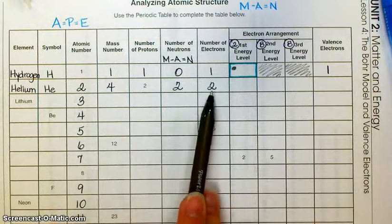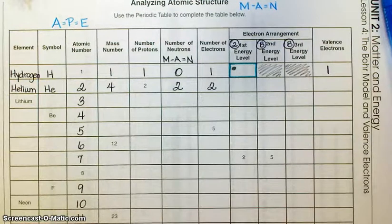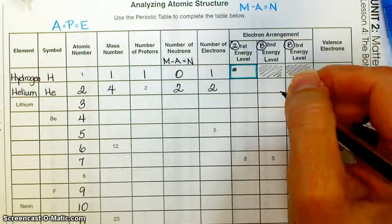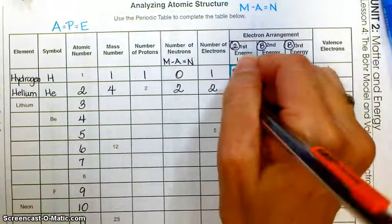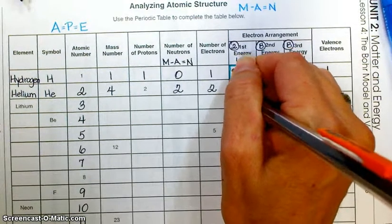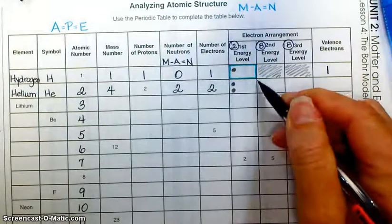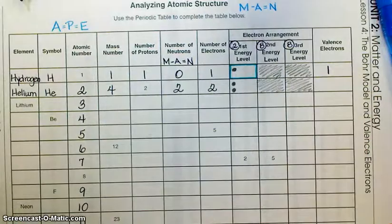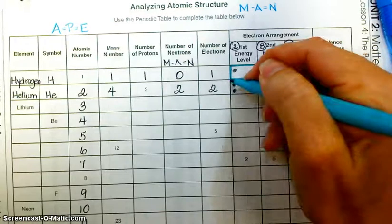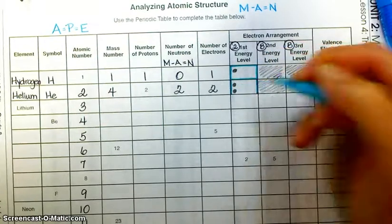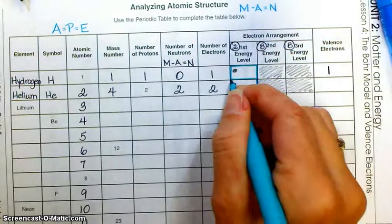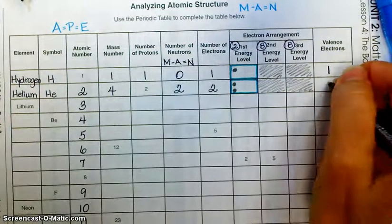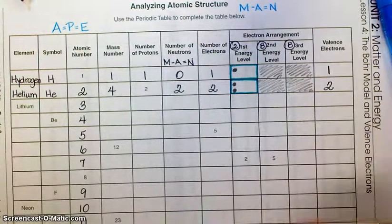Helium has a total of two electrons. We place them in energy levels — fill the first energy level before moving to the second. The first energy level holds two electrons, and two is all we have, so we don't use the second or third energy level. That first energy level is helium's only and outermost energy level, so helium has two valence electrons.